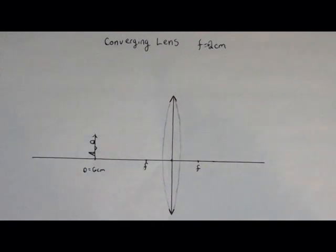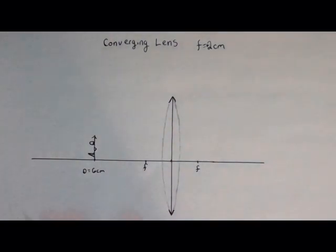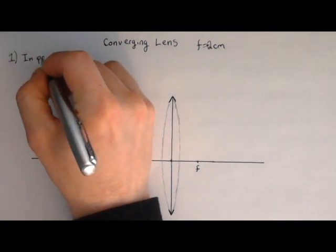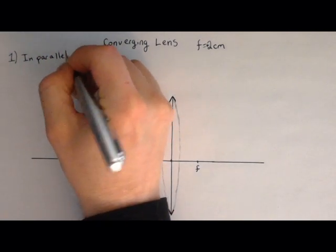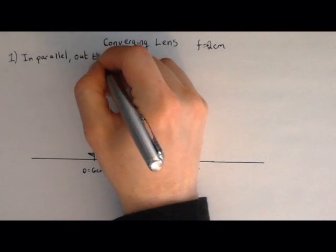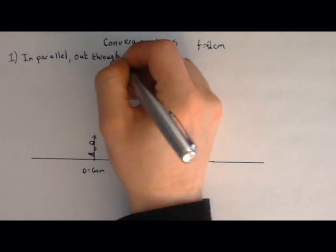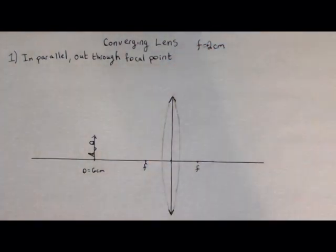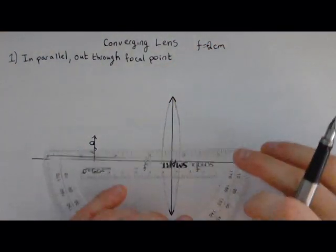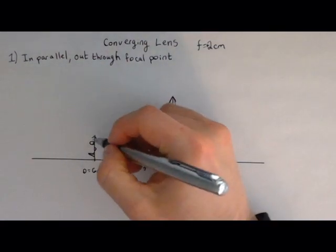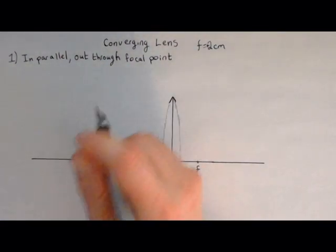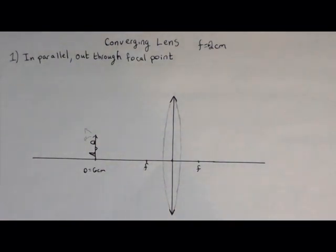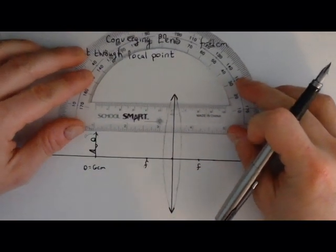Now we can go through and actually start drawing our rays. Remember, ray number one is in parallel, out through focal point. So that's our first ray. That's easy enough. So there is a ray coming off of the top of our object, right? Light rays are going off in all directions off the top of this object. But there's going to be one that comes in parallel to my optical axis.